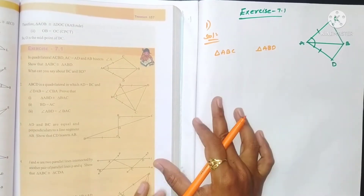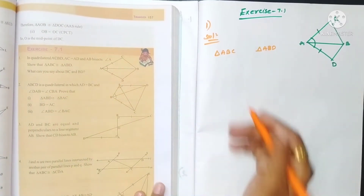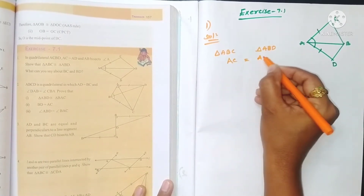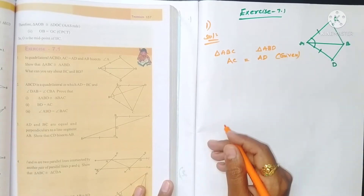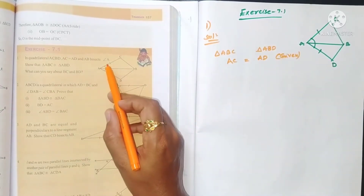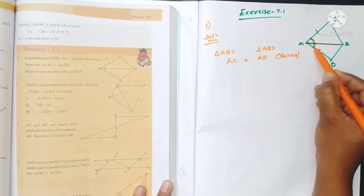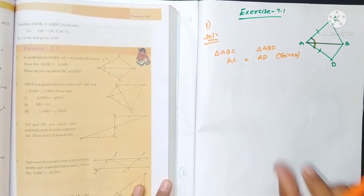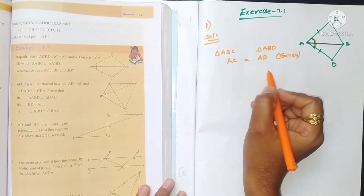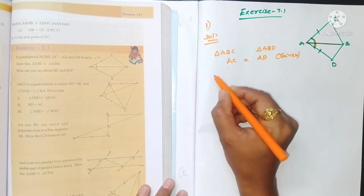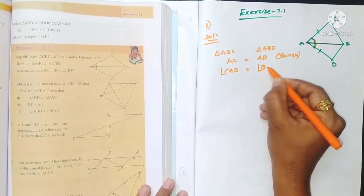In triangles ABC and ABD, AC is equal to AD — this is given. And AB bisects angle A, meaning AB divides angle A into two equal parts. Bisecting means dividing into two equal parts. So we can say angle CAB is equal to angle DAB.